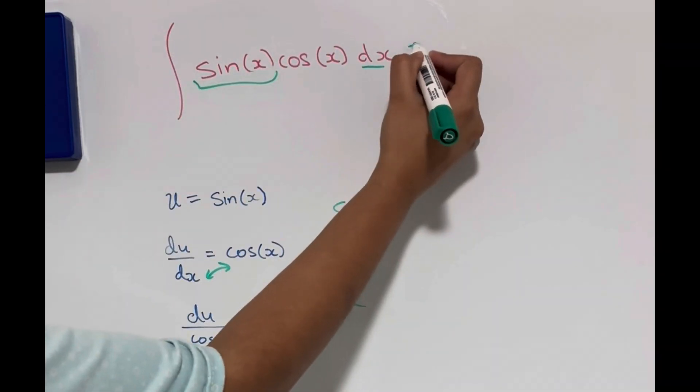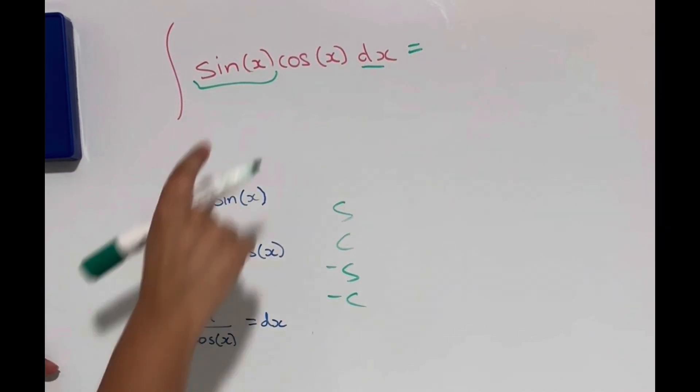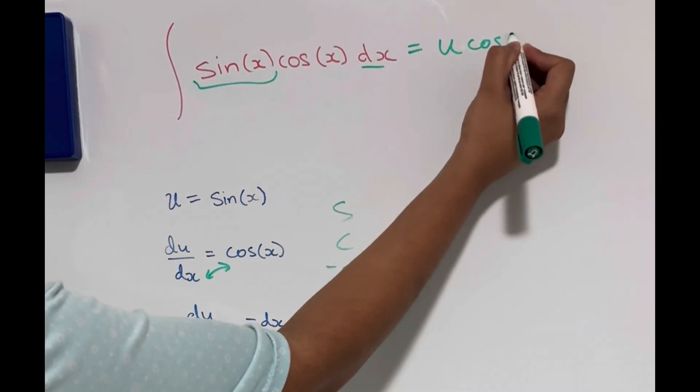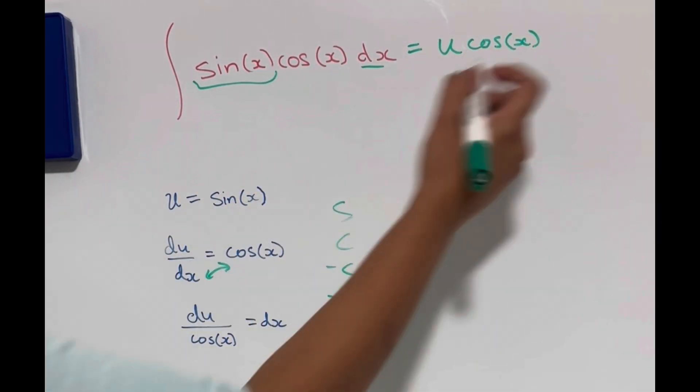And now we can rewrite this in terms of u and du/cos x. So sin x is going to become u. We're going to write the cos x as it is. And then dx is going to become du/cos x.